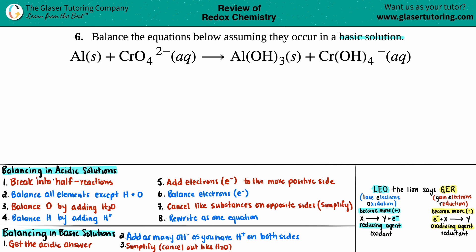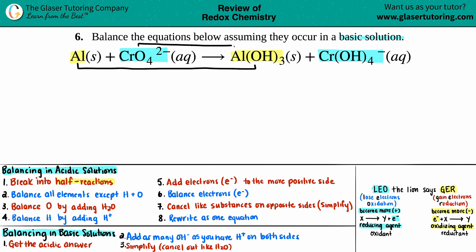The first step for an acidic solution is to break it into half-reactions. Take this one whole reaction and break it into two — it's as easy as just seeing what elements go together. If I have aluminum here, the substance with aluminum in it is its pair. Then the other pair has chromium and oxygen: CrO₄²⁻ goes with Cr(OH)₄⁻. So Al pairs with Al(OH)₃, and CrO₄²⁻ pairs with Cr(OH)₄⁻.